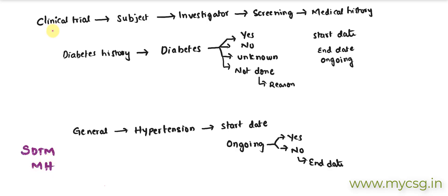Let's say there is a clinical trial in which a subject is participating. The subject has arrived at the clinical site, the investigator is performing some assessments on the screening visit, and medical history is part of that assessment. The medical history is being collected in two different sections: one is specifically asking if the subject has any diabetes history, and the other covers any other general medical history conditions.